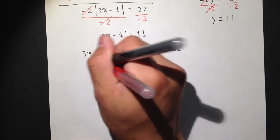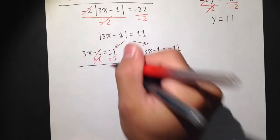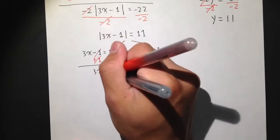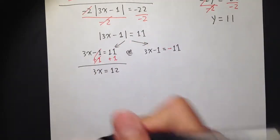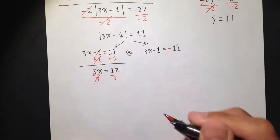Here, add plus 1 on both sides. So the 1 cancels. And I get 3x is equal to 11 plus 1, which is 12. 3 times x is equal to 12. We can divide both sides by 3. So the 3 cancels.